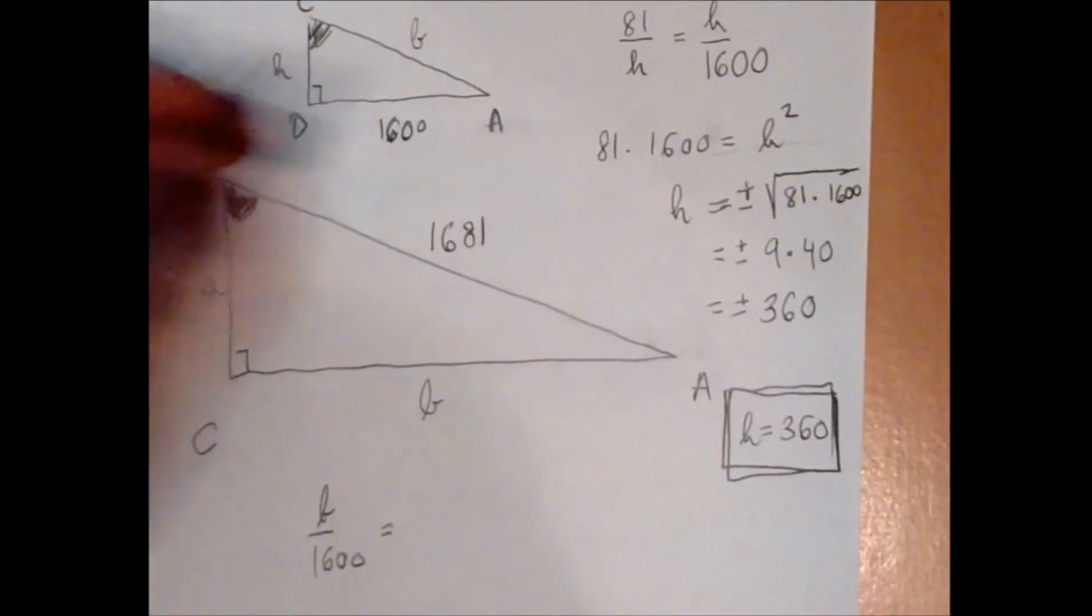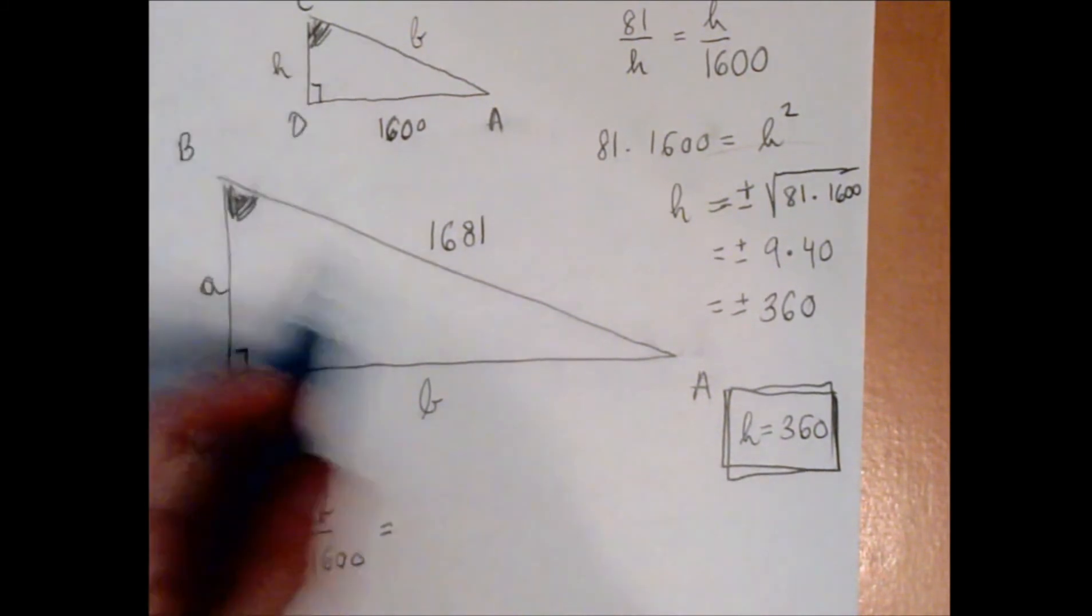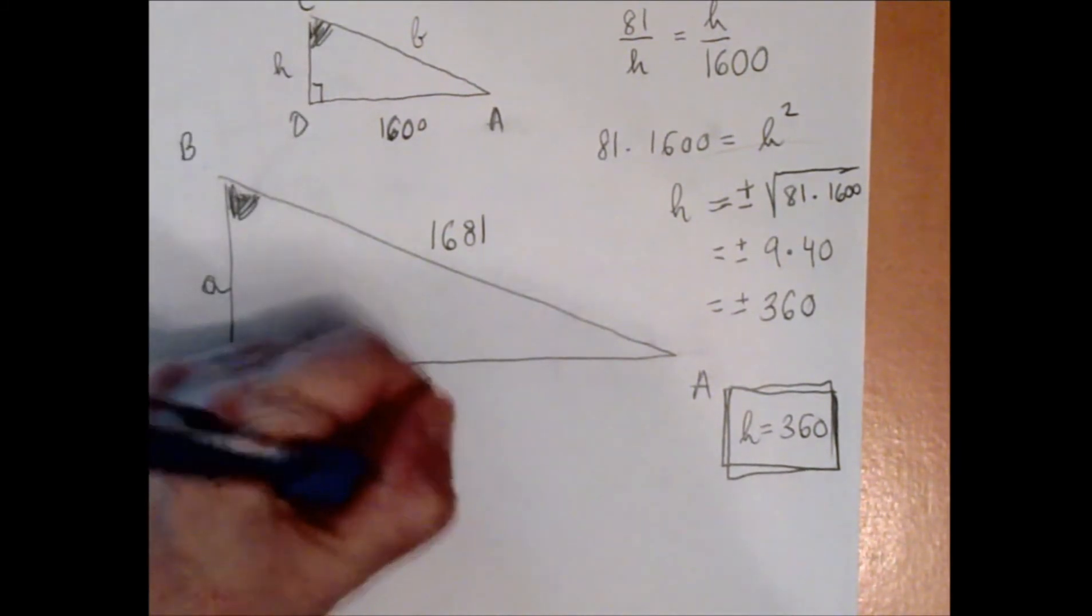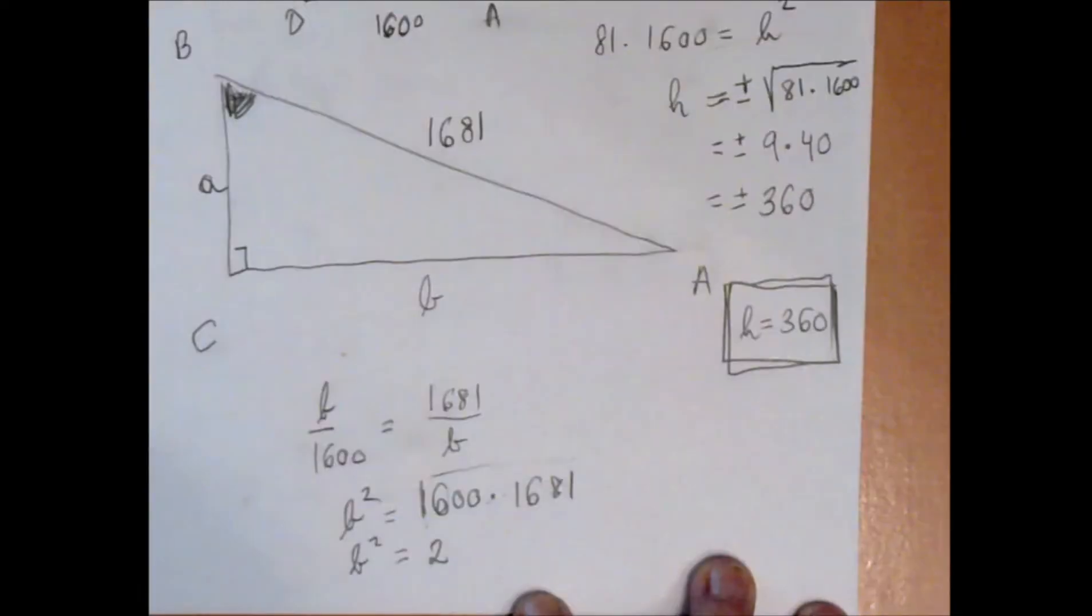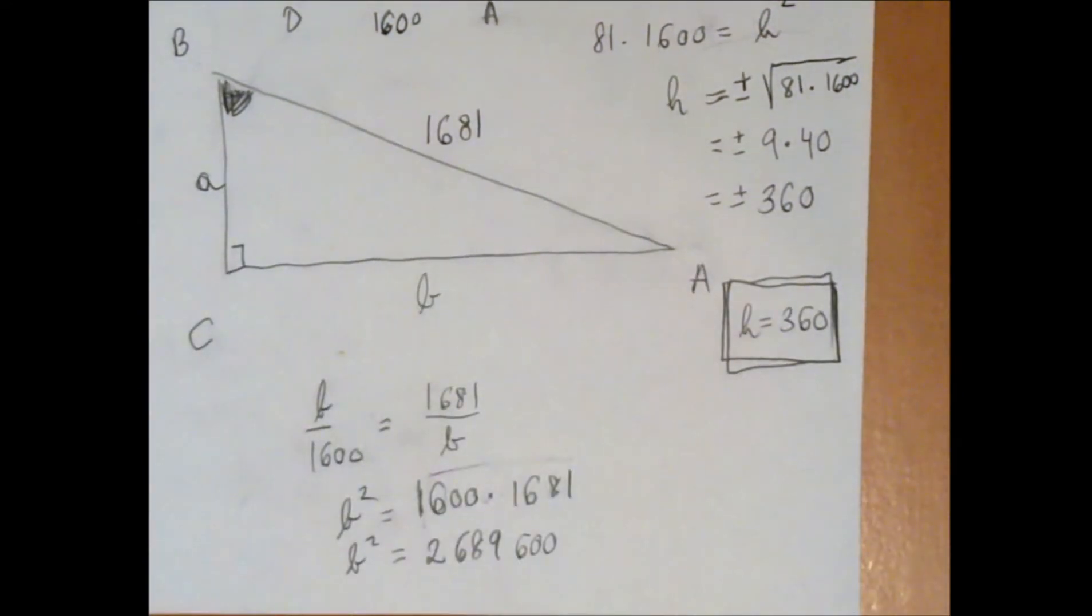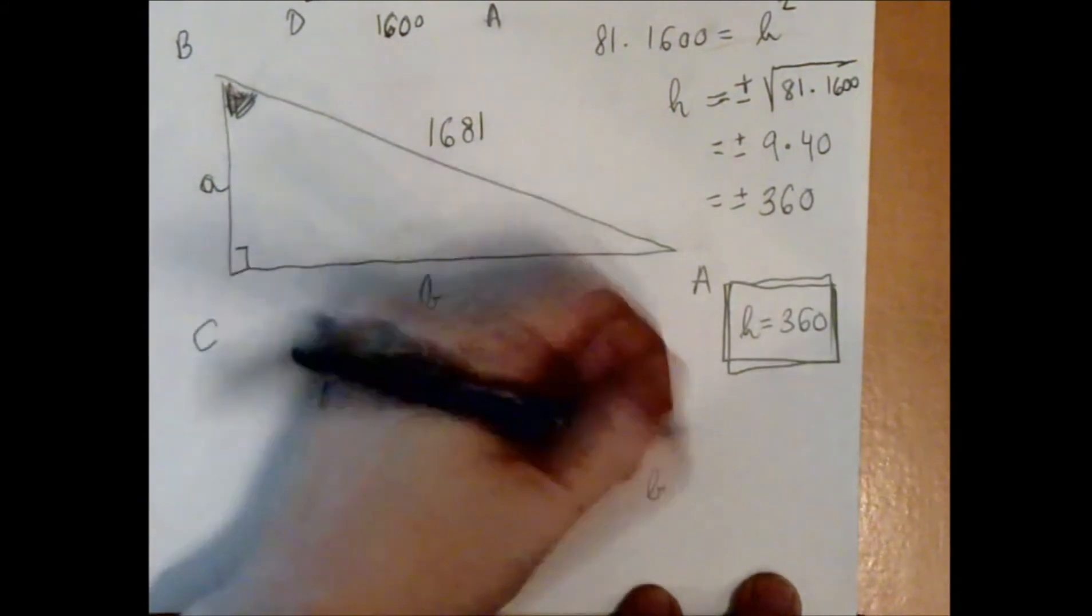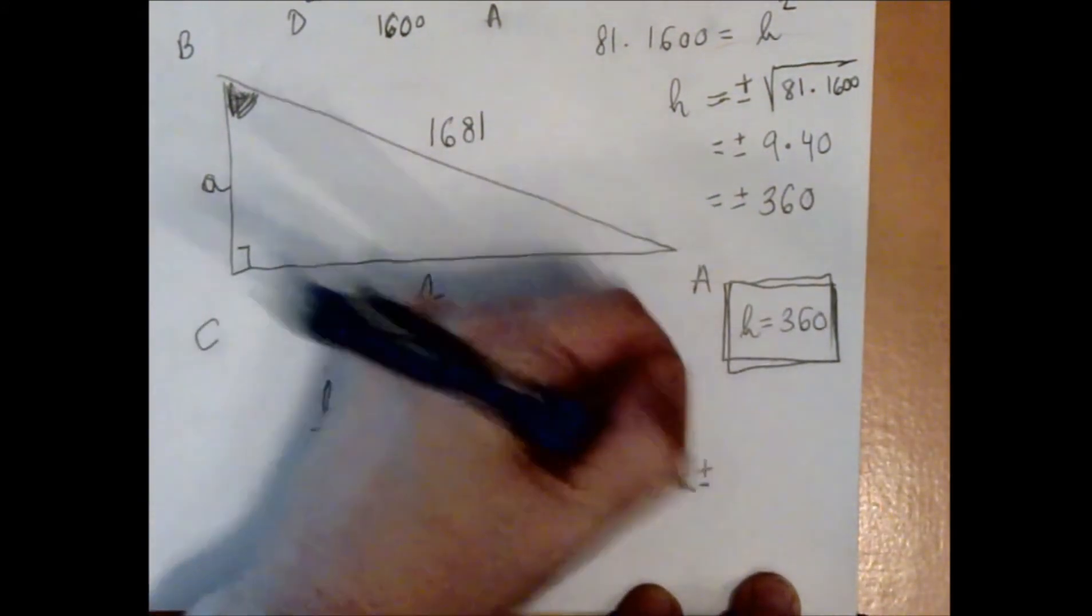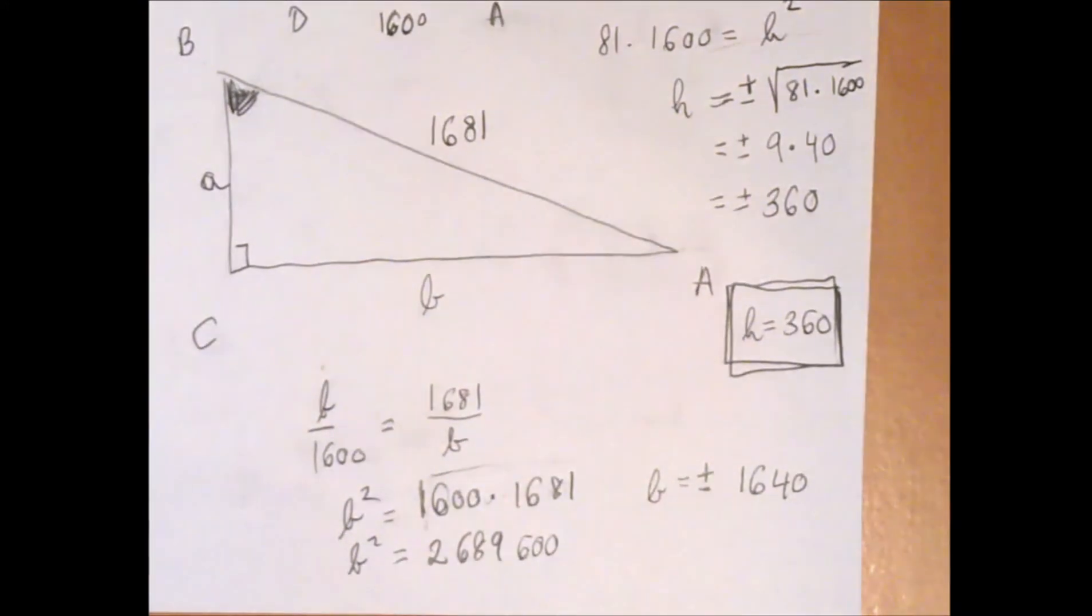We can write b over 1600 equals 1681 over b. That's the hypotenuse over the horizontal side, hypotenuse over the horizontal side. We get a similar equation: b² is 2,689,600. When we take the square root, we find that is a square—it's the square of 1640.